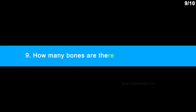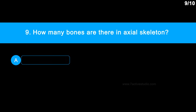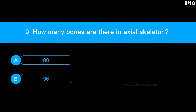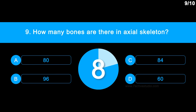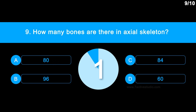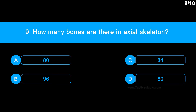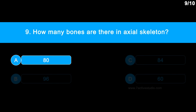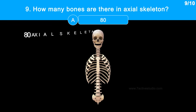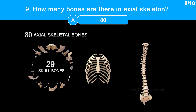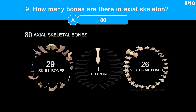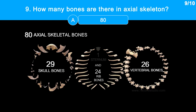Question 9: How many bones are there in the axial skeleton? Option A: 80. Option B: 96. Option C: 84. Option D: 60. The correct answer is option A, 80. There are 80 bones in the axial skeleton: 29 skull bones, 26 vertebrae bones, 1 vertical flat bone sternum, and 24 rib bones.